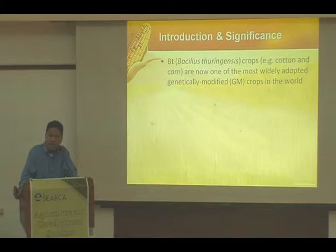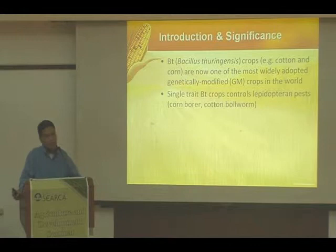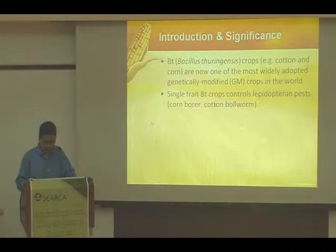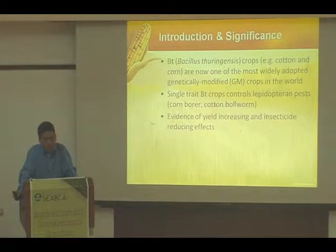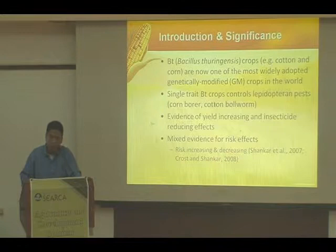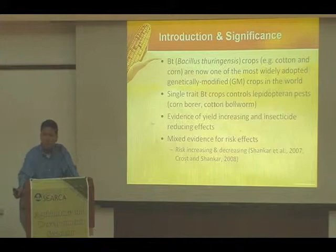Bt crops — both corn and cotton — are now one of the most widely adopted GM crops in the world. Single-trait Bt crops released way back control lepidopteran pests and have been adopted very widely. Nowadays, even double, triple, multi-stack Bt corn and Bt cotton exist. Given the popularity of this GM crop, there are many studies looking at whether it increases yield and reduces insecticide use. The general consensus is that there is indeed a yield-increasing effect and insecticide-reducing effect for Bt, which is somewhat expected. However, in terms of production risk for this technology, there has been mixed evidence.